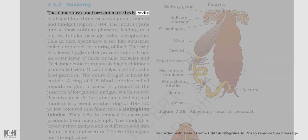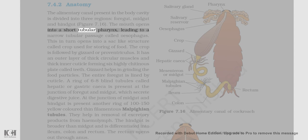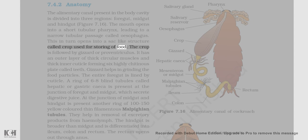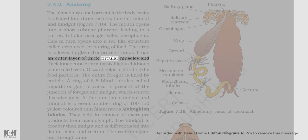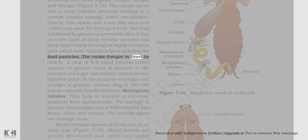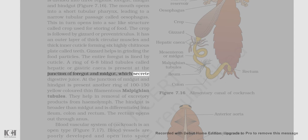The alimentary canal present in the body cavity is divided into three regions: foregut, midgut, and hindgut (figure 7.16). The mouth opens into a short tubular pharynx, leading to a narrow tubular passage called the oesophagus. This in turn opens into a sac-like structure called crop, used for storing of food. The crop is followed by the gizzard or proventriculus. It has an outer layer of thick circular muscles and a thick inner cuticle forming six highly chitinous plate-like teeth. Gizzard helps in grinding the food particles. The entire foregut is lined by cuticle. A ring of six to eight blind tubules called hepatic or gastric caeca is present at the junction of foregut and midgut, which secrete digestive juice.